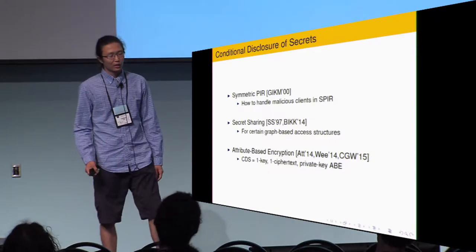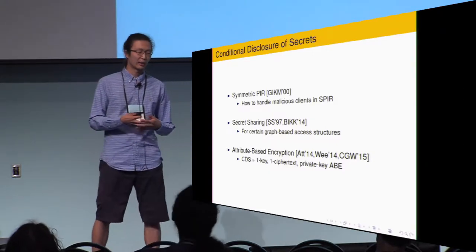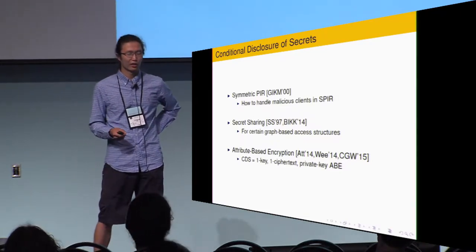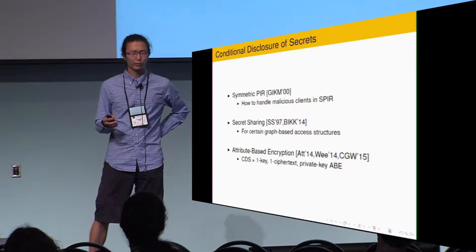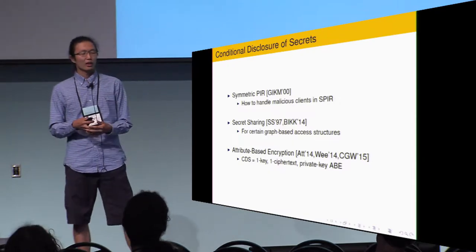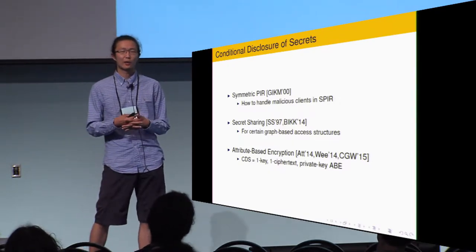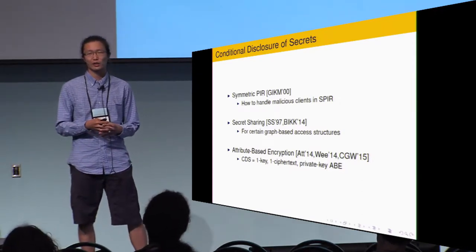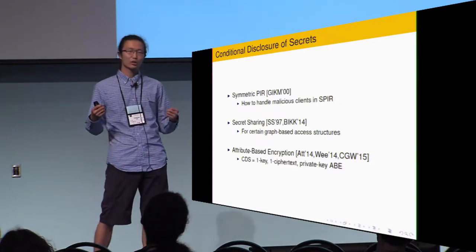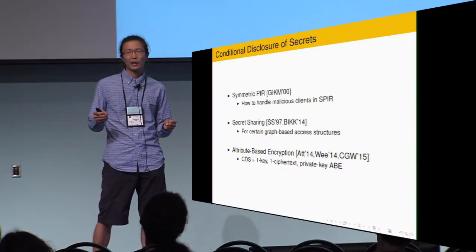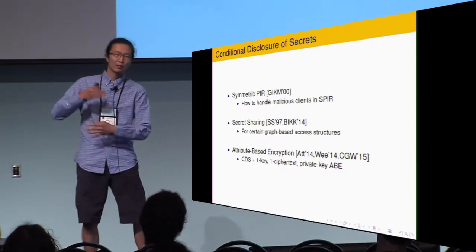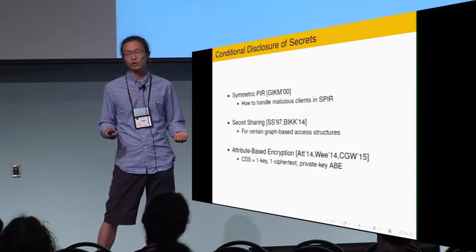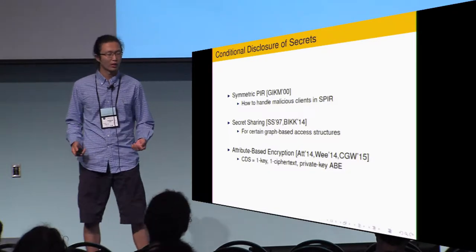CDS is very useful. In paper by Gutner, Ishai, Kushilevitz, and Ostrovsky, it was used to protect data privacy in PIR schemes. It also implies secret sharing of a graph and looks like one-time attribute-based encryption, and it can be lifted to a multi-time attribute-based encryption. It's also an interesting primitive on its own.